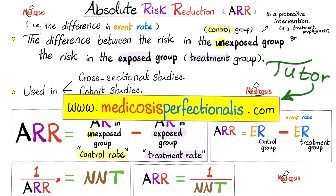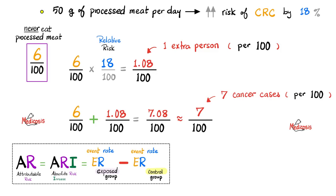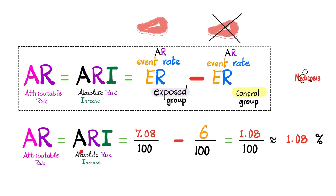The inverse of the absolute risk reduction is called number needed to treat, whereas the inverse of attributable risk is known as number needed to harm. If I'm trying to calculate the absolute risk increase, I'm also subtracting — however, the exposed group will have the bigger numbers than the control group because the risk is increasing. This is the opposite of absolute risk reduction.